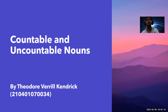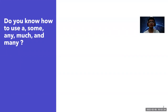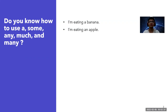Countable and uncountable nouns. First of all, do you know how to use a, an, some, any, much, and many? For example: 'I'm eating a banana.' Second: 'I'm eating an apple.' The difference here is we use 'a' for a consonant sound in front of the object, and we use 'an' for a vowel sound in front of the object.